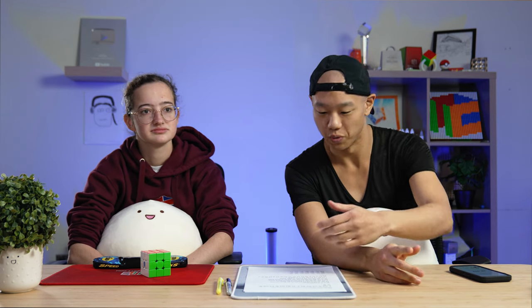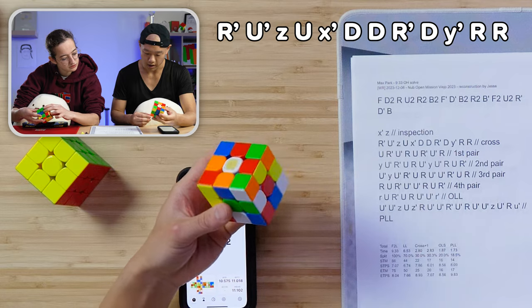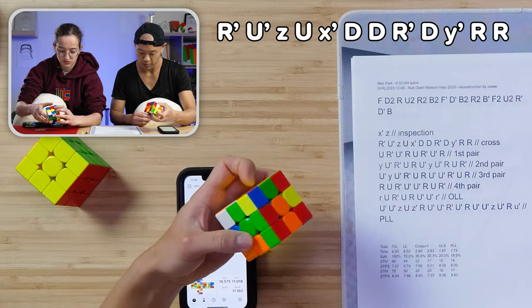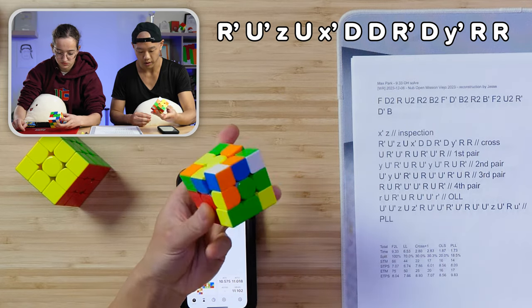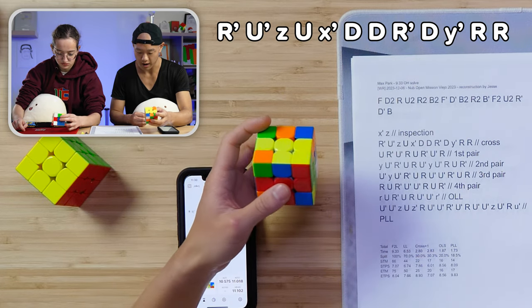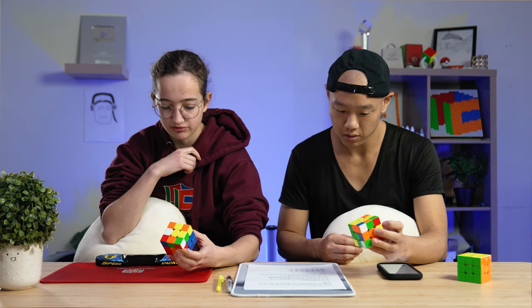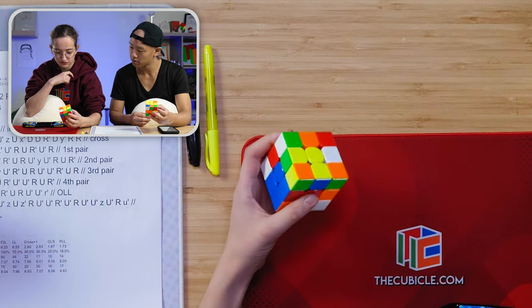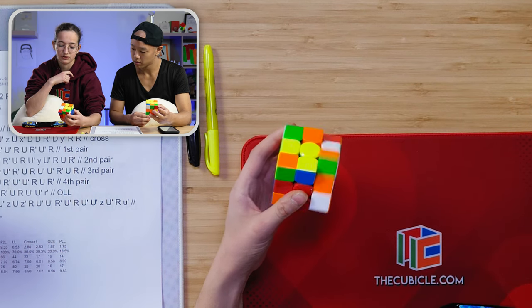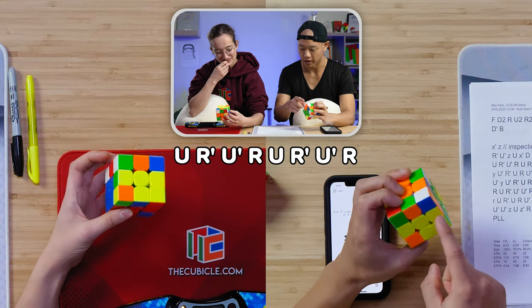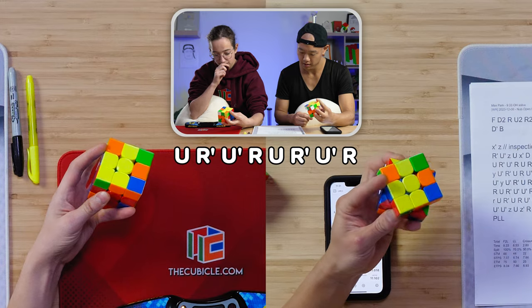I think Jesse did the first two and then he was like, I need to call for help. So then Stewie came to his aid. So I don't think the cross is anything special. Okay. So he gets the F2L from this position. An interesting thing to know is that Max Park obviously doesn't double flick. So every time he has an R2, he either does RR or sometimes R prime, R prime, which is obviously fast for him.